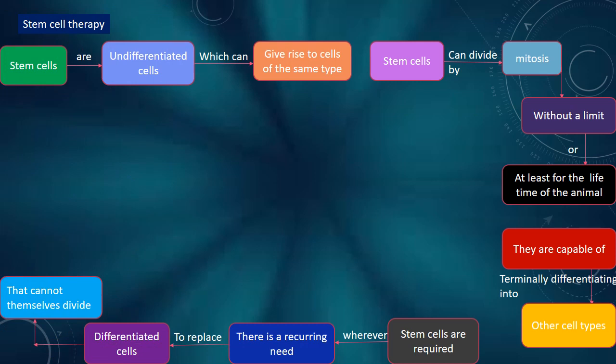Stem cell therapy uses stem cells, which are undifferentiated cells that can give rise to cells of the same type. Stem cells can divide by mitosis without a limit, or at least for the lifetime of the animal.